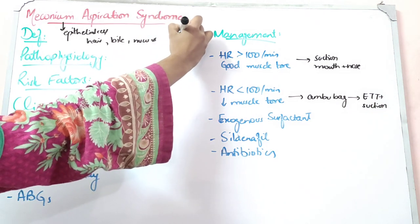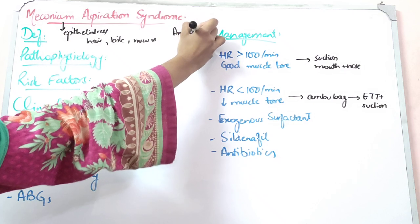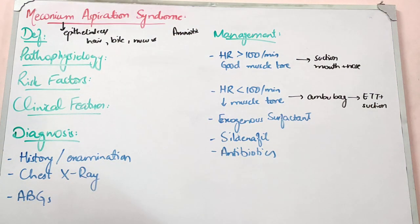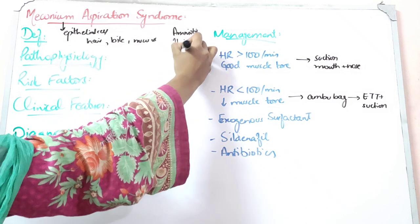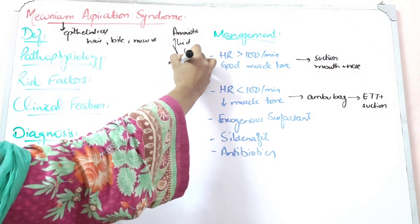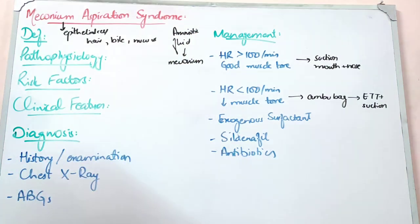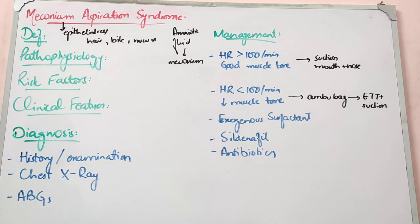When meconium is found in the amniotic fluid, it is a sign of fetal distress. In this situation, a gynecologist must call a pediatrician to be present, because there is evidence of fetal distress. Meconium-stained amniotic fluid is present and the fetus may develop problems during or after delivery.